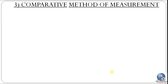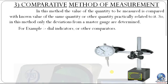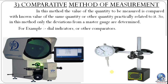Next, the comparative method of measurement. In this method, the value of the quantity to be measured is compared with a known value of the same or related quantity, so that only deviations from the master gauge are determined. We are not providing accurate absolute dimensions, but indicating deviation from the standard. Examples include the dial indicator and comparators, such as an optical comparator used for measurement of threads.